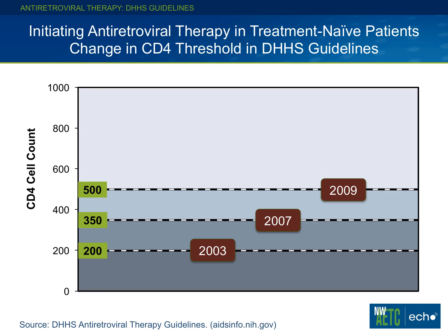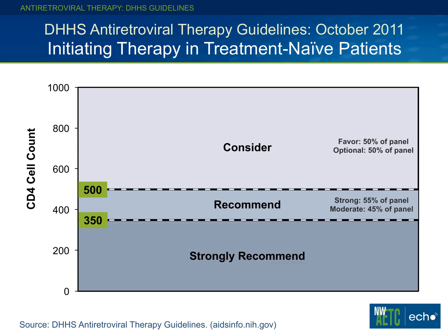Through time, these recommendations have really changed as to where therapy is recommended. Back in 2003, we were waiting for people to technically develop AIDS or AIDS-defining illnesses before starting therapy. The therapies were much harder to take, more toxic, and we didn't have as many second-line options. But since that time there's been a lot of drug development, and the line in the sand has moved up to 350 in 2007 and then to 500 since 2009.